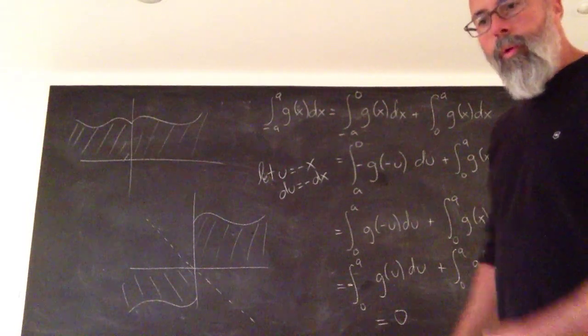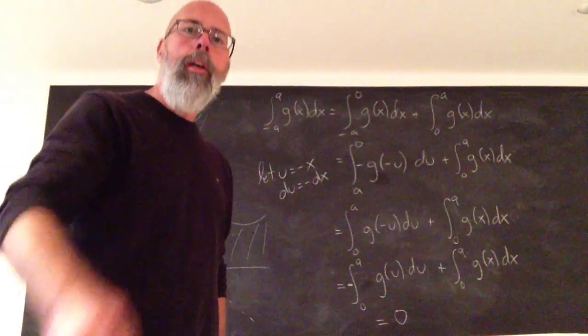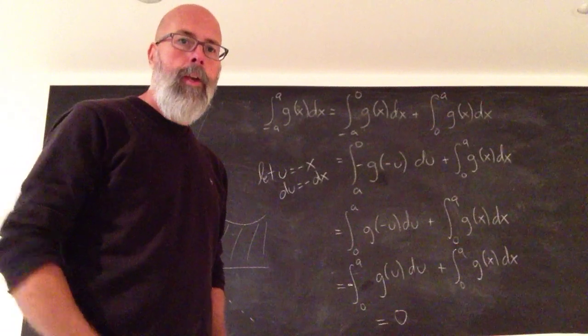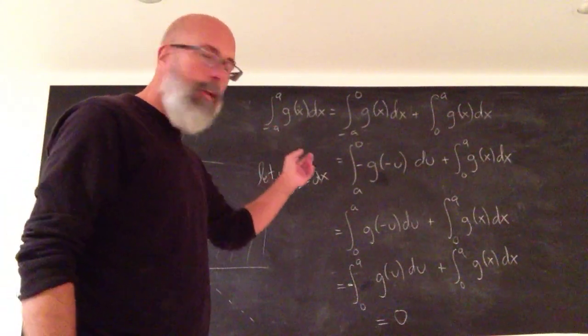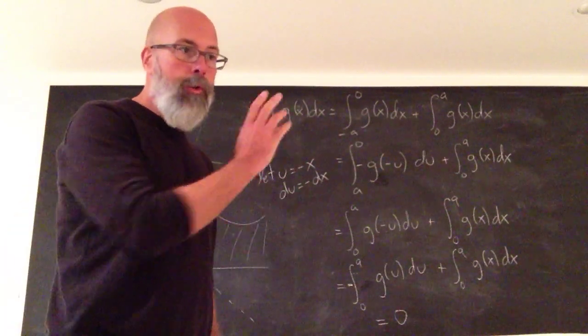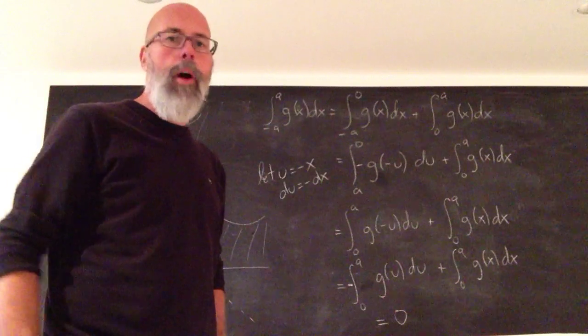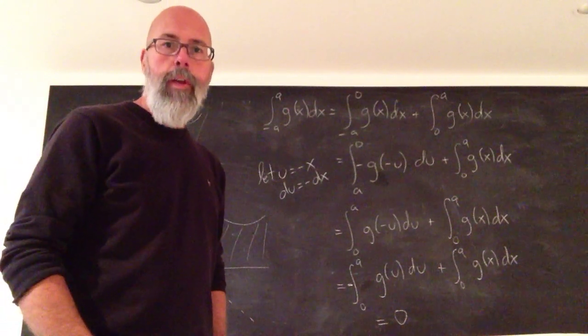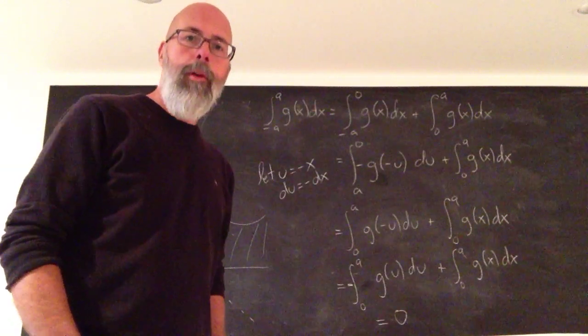I'll let you repeat this with the even function. It's exactly the same proof. You're going to split up the integral into two pieces, make the same U substitution, and you'll see that both integrals are exactly the same, so you get twice the integral. Try it. Let me know what happens.